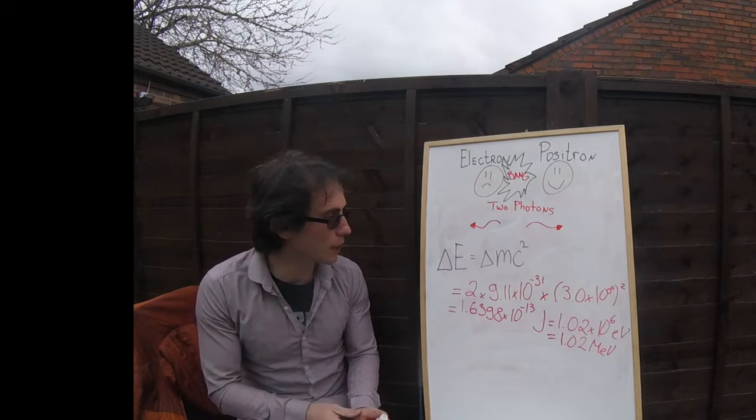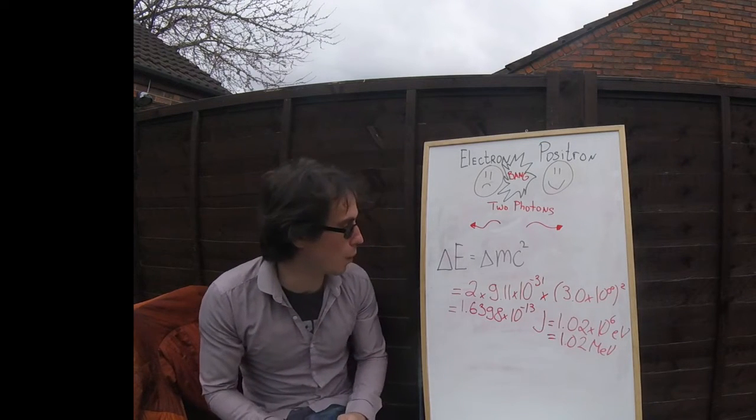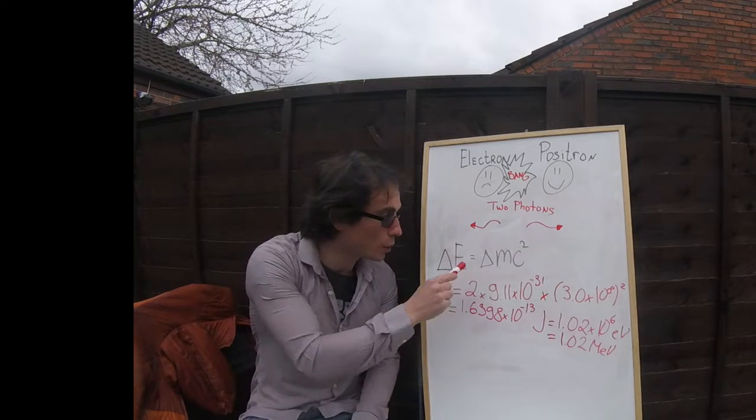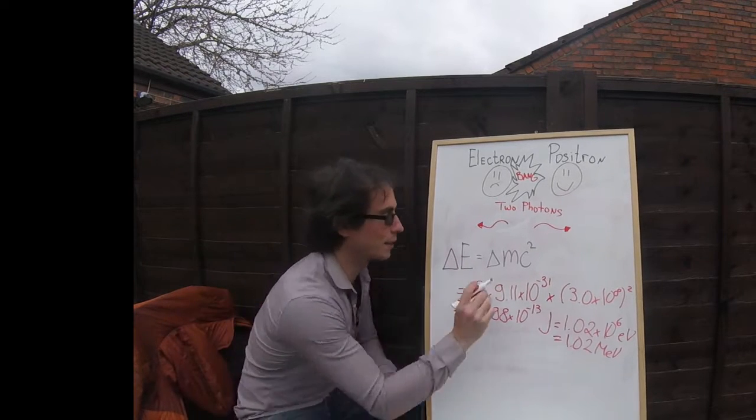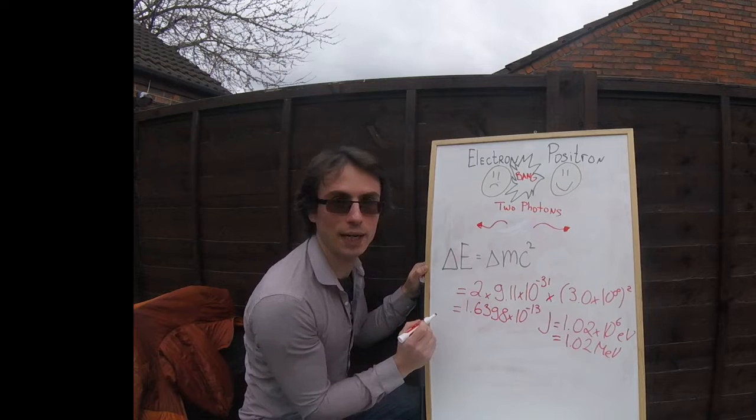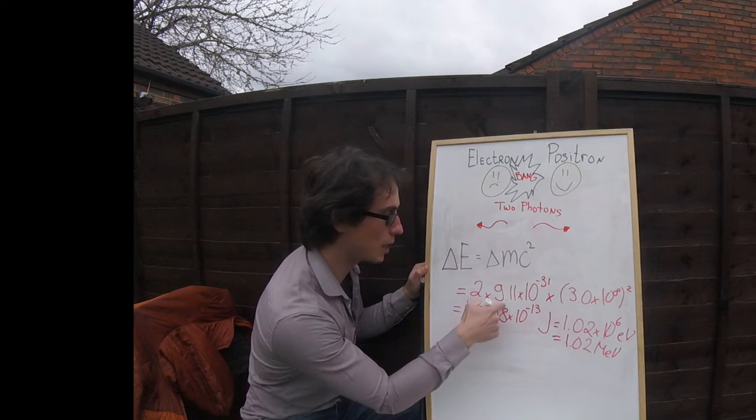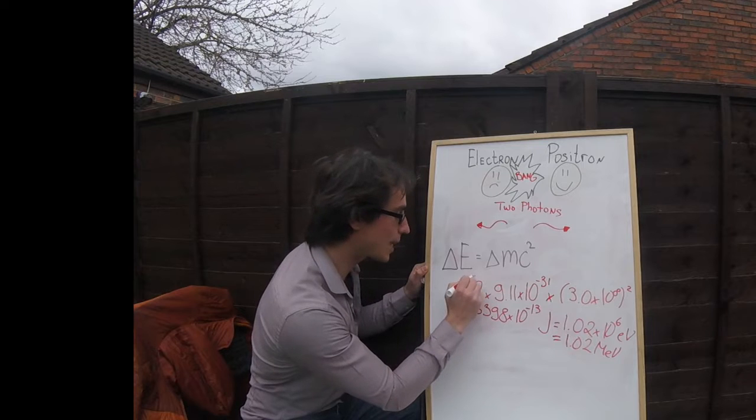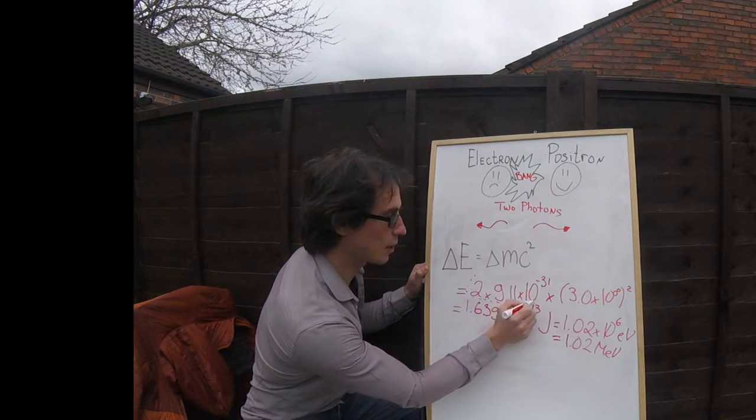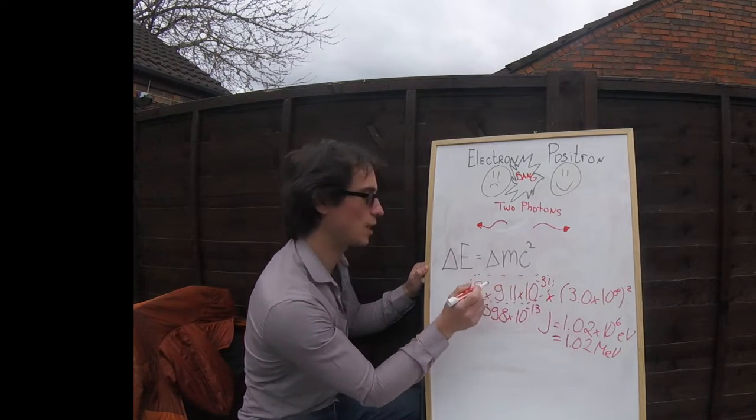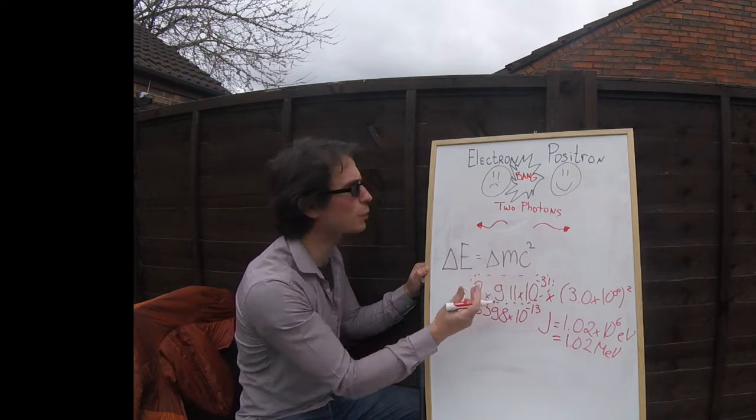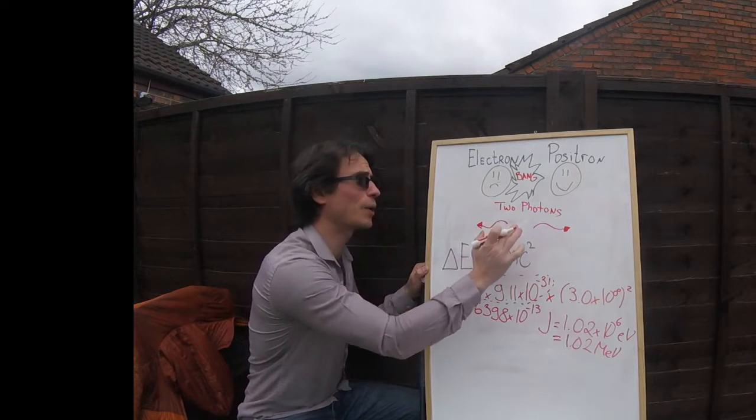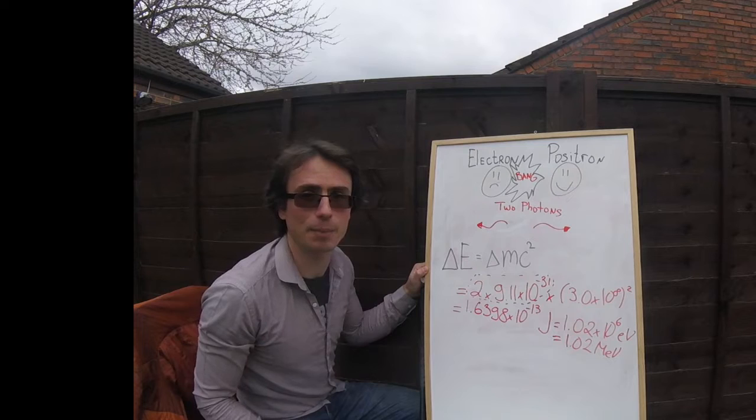So we can see over here this worked example already. What we're going to use for the mass is twice the electron mass. Remember the electron mass is 9.11 times 10 to the power of minus 31. So our delta m is going to be this quantity over here which is twice the electron mass because an electron has exactly the same mass as the positron.